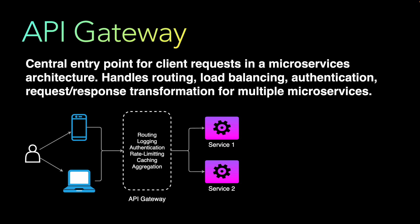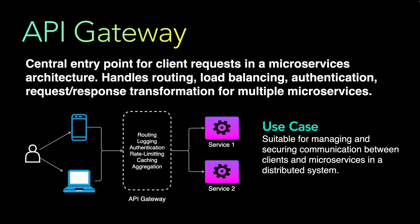The API gateway also handles request-response transformation and aggregation to adapt to requirements of different microservices or clients. This includes data format conversion, protocol translation, and other modifications as needed. The API gateway pattern is primarily suitable for managing and securing communications between clients and microservices in a distributed system.